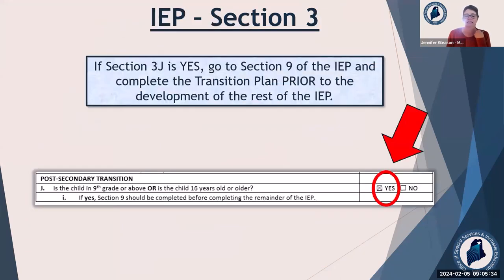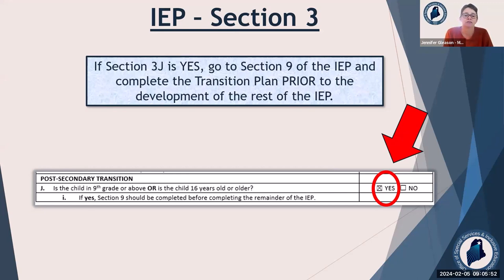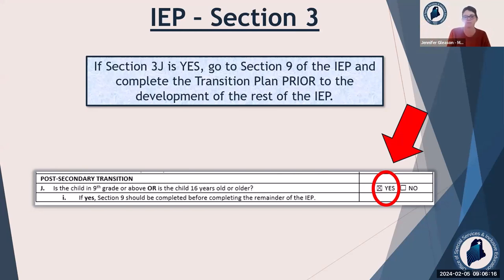So let's get into it — compliant transition plans. This is going to be the absolute basics of what's compliant. In section three on your IEP, where you check off all of those considerations, that last question is about post-secondary transition: is the child in ninth grade or above? If yes, section nine should be completed before completing the remainder of the IEP. This is because the whole IEP should really be feeding those post-secondary goals — in high school, we're preparing our students to go out into the world.